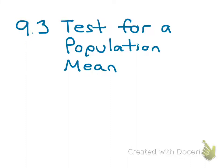This video is for section 9.3, Test for Population Mean. Since we've already done confidence intervals for population means and we just saw a hypothesis test for proportions, we're going to dive right into an example and see how this one is different, adding new material as we go along.